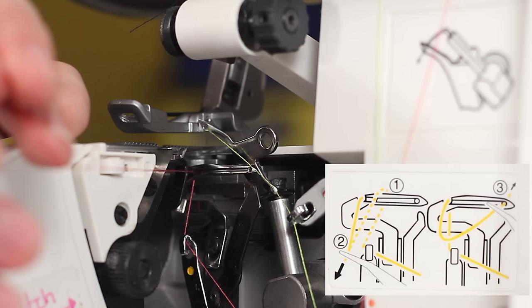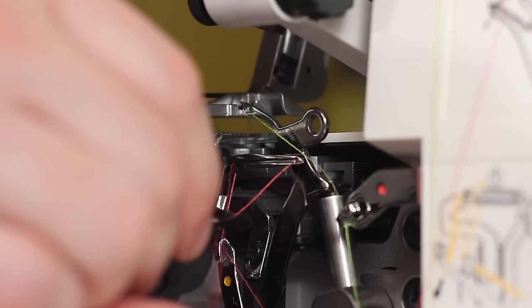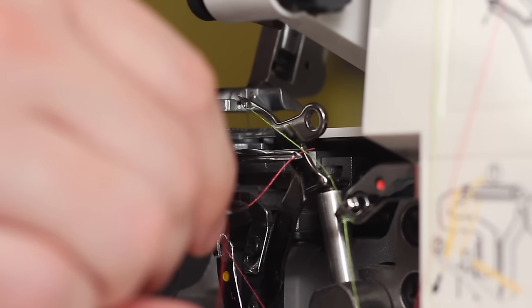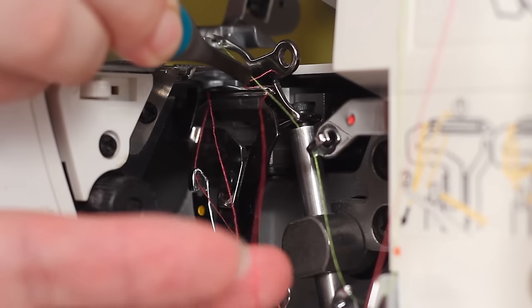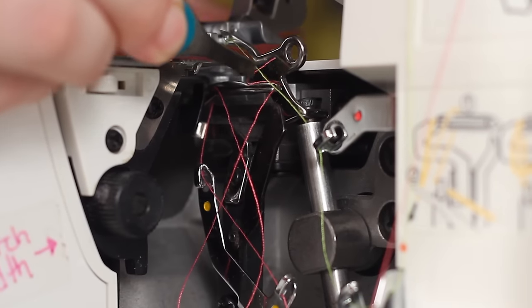Now you want to pass the thread through the eye of the lower looper needle. This part can also be a little tricky. Once you get the end through the hole, just come from behind it and pull it all the way through.